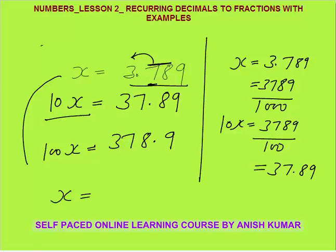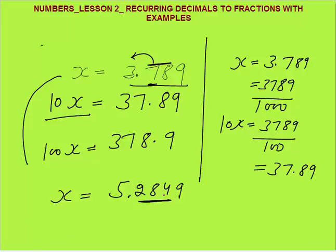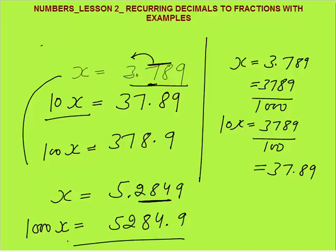Another example: if x equals 5.2849 and I want to shift three digits — 284 — to the left of the decimal, I multiply by 1000. Three digits to shift means multiply by 10 to the power 3, that is 1000. This becomes 5284.9. This concept will be useful when converting recurring decimals to fractions.